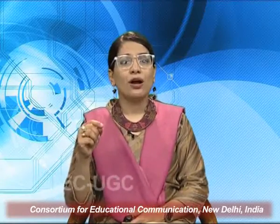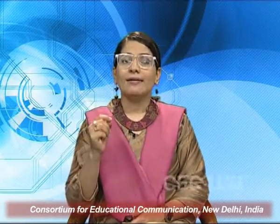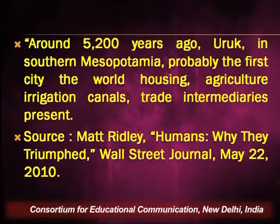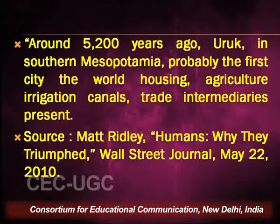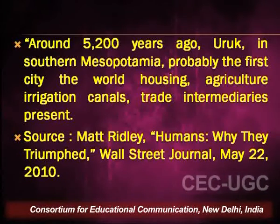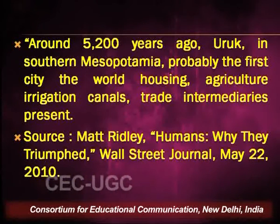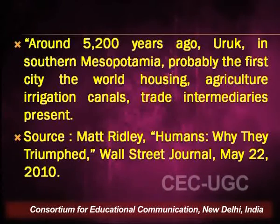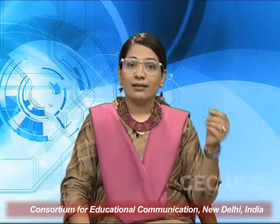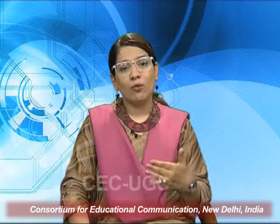Around 5,200 years ago, Uruk in southern Mesopotamia probably saw for the first time housing, agriculture, irrigation canals, and trade intermediaries. This gives a reflection as to what can really guide people to trade, because there is a belief that exchange paves the way for betterment. This idea of Uruk being in southern Mesopotamia and the idea of civilization, we can read more about it from Matt Ridley's 'Humans: Why They Triumph,' Wall Street Journal.